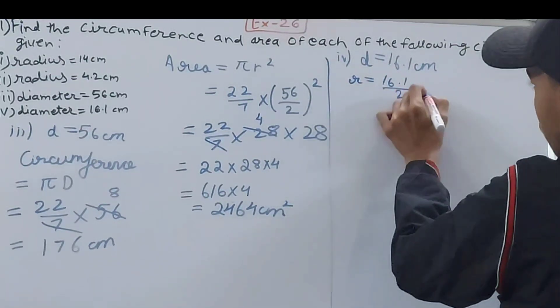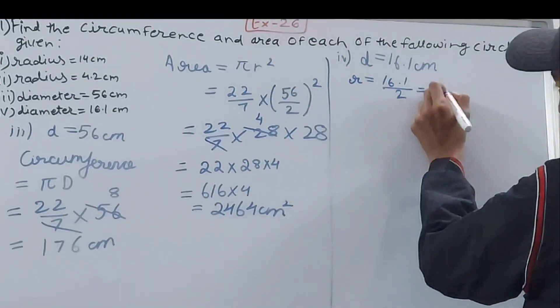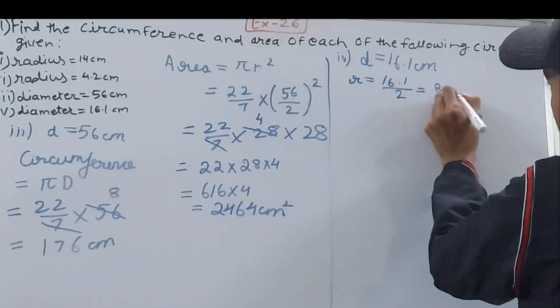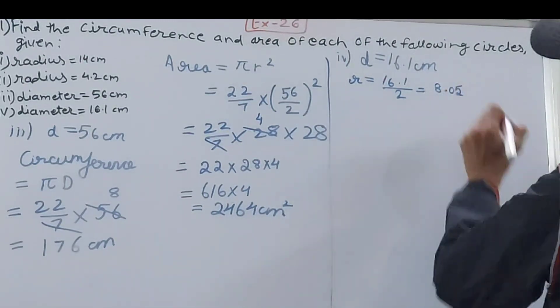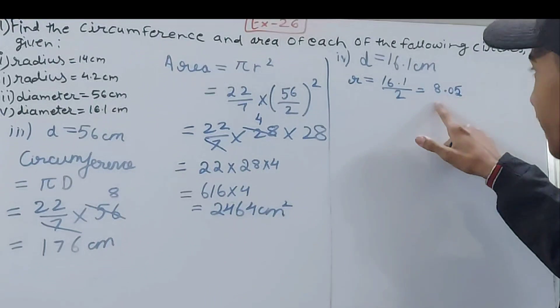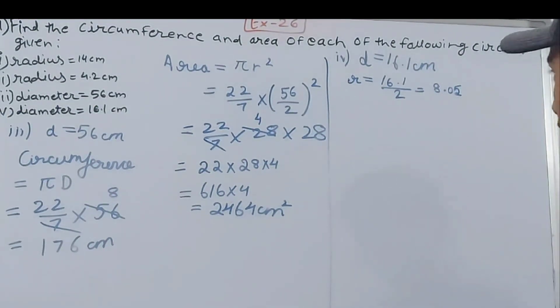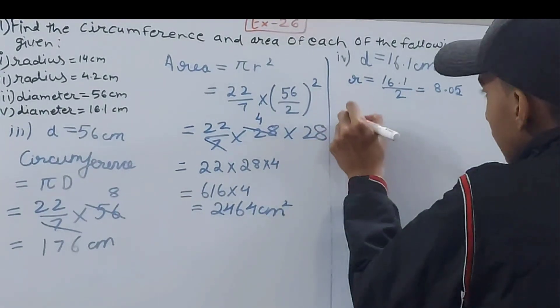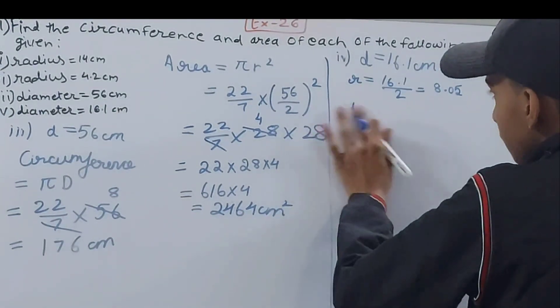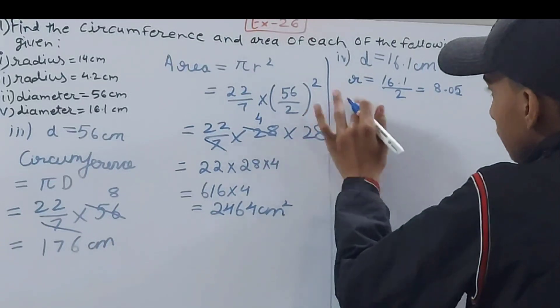First the radius will be 16.1/2 = 8.05. Eight goes, bring down 1 so point, then 1 will not go so 0, and 1 is 5. Now calculate the circumference first. Circumference will be πd.